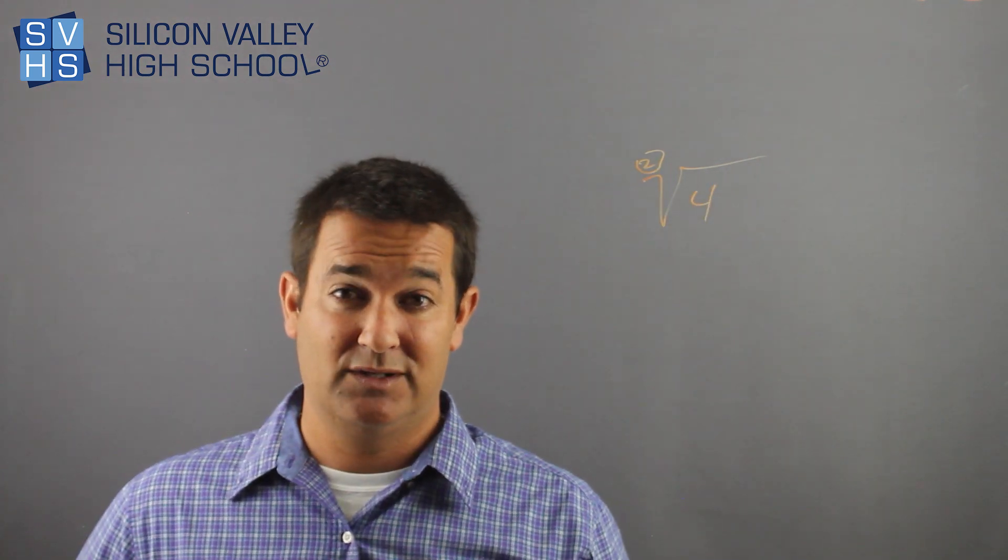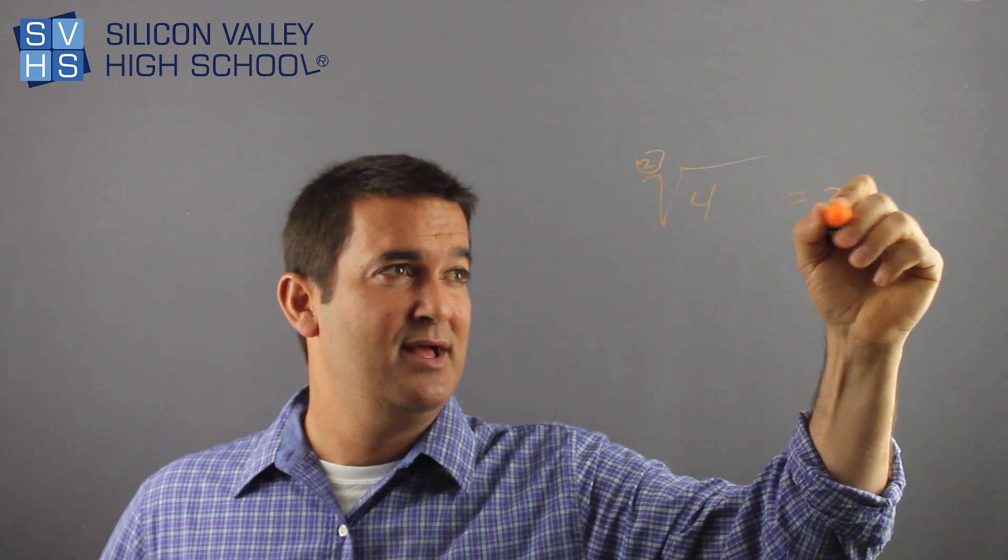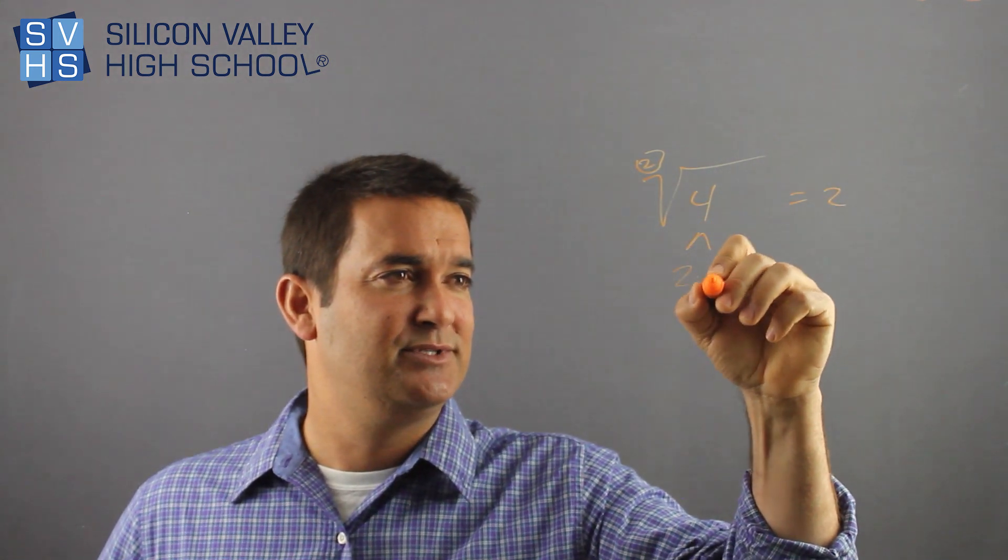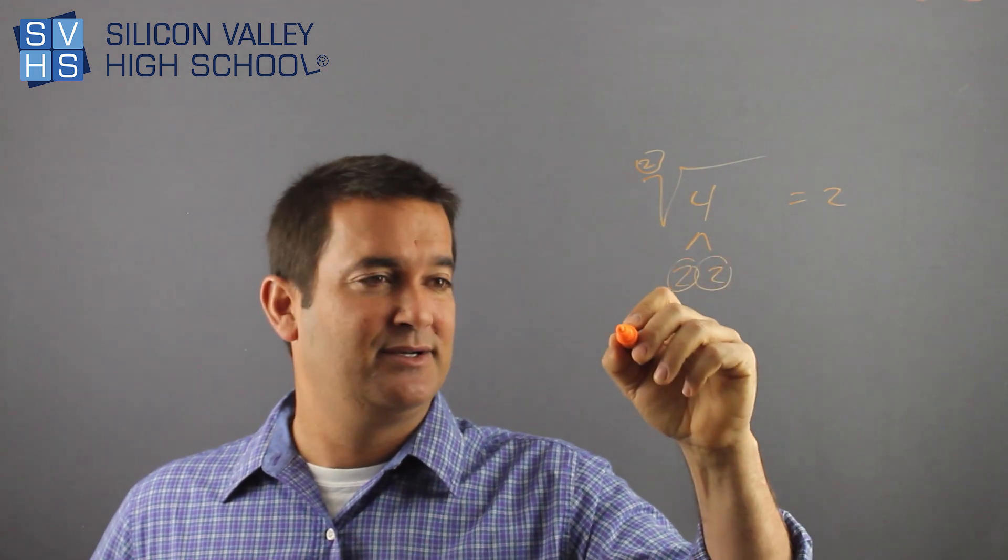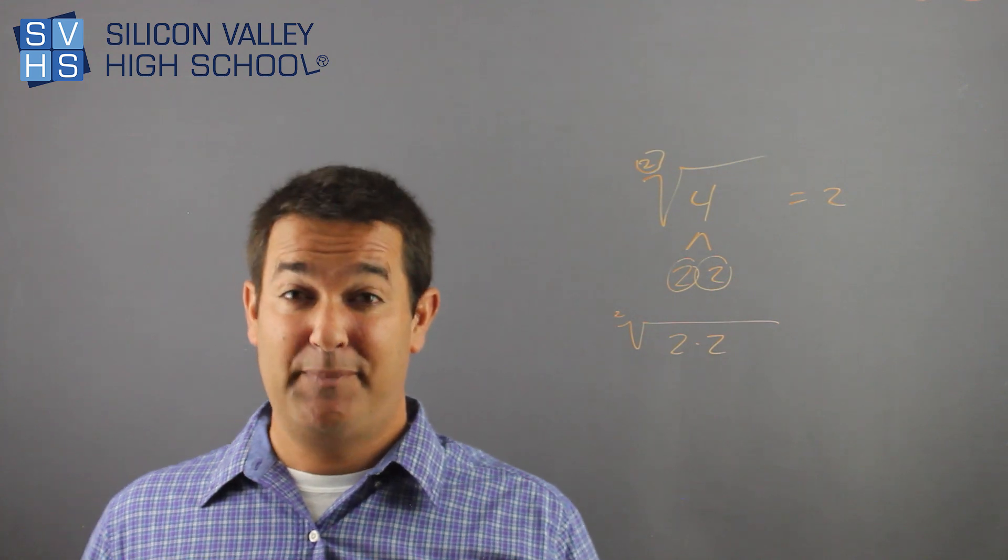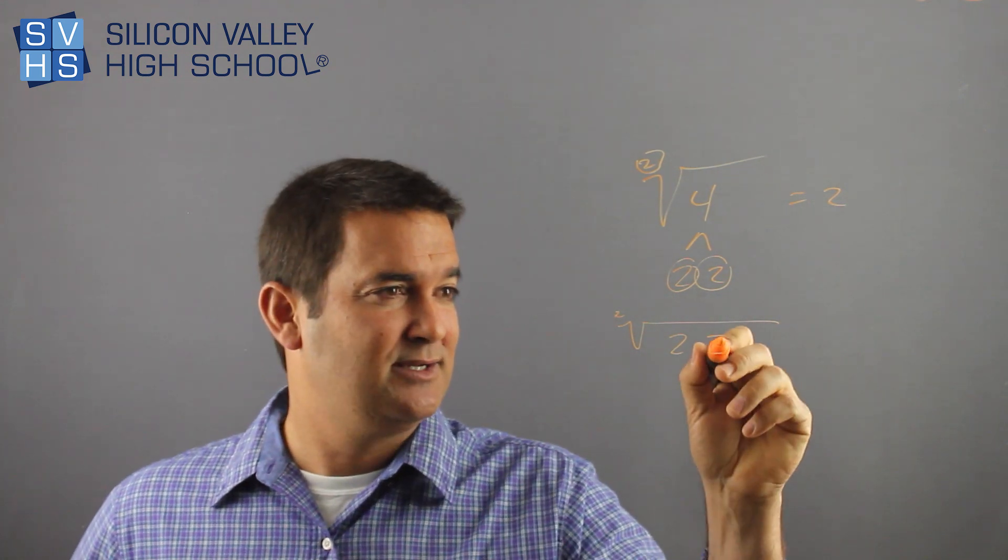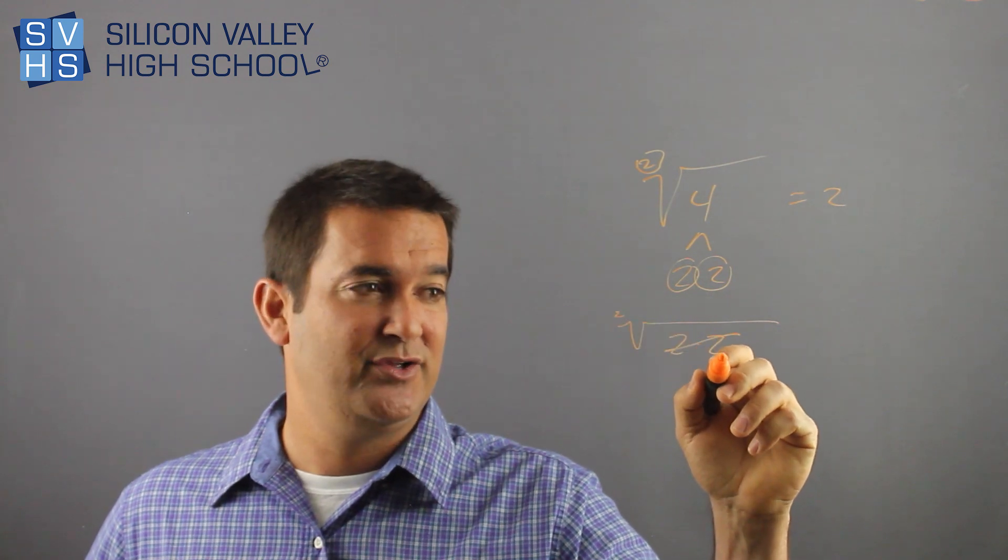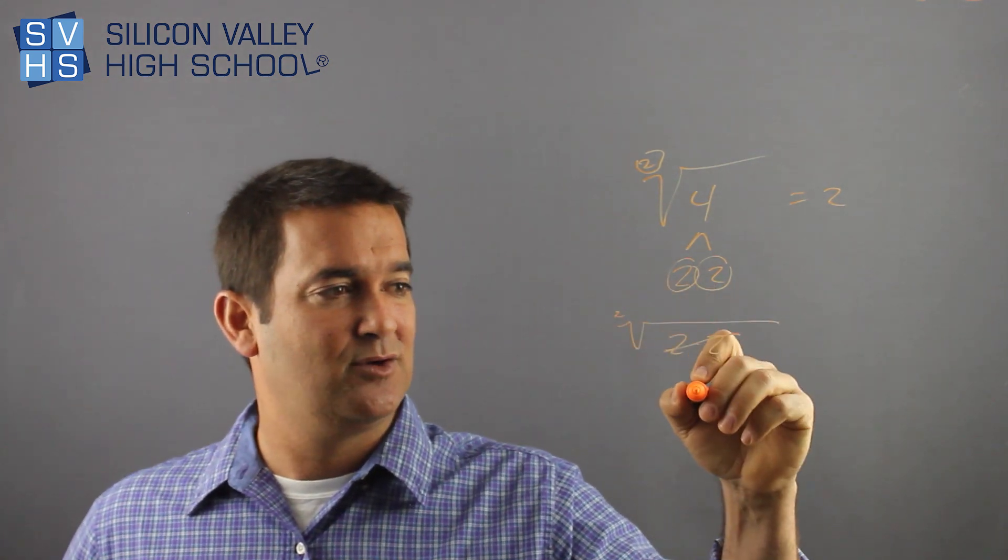And what that means is you're looking for groups of two or pairs of two. So if I actually did this root for the long way, which the answer is two, if I did it the long way I would factor the four and I would have two times two. They're done being factored. So I really have the square root of two times two. And because there's a little two here, I'm looking for pairs of two. Are there any? There's a pair of twos right there. If you satisfy this, if you are a pair of two, you're allowed out of jail.